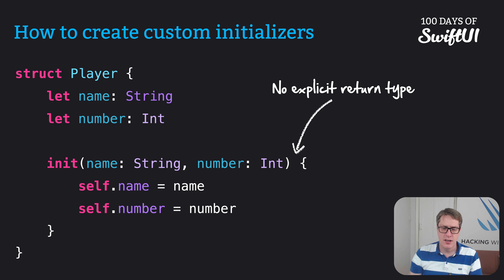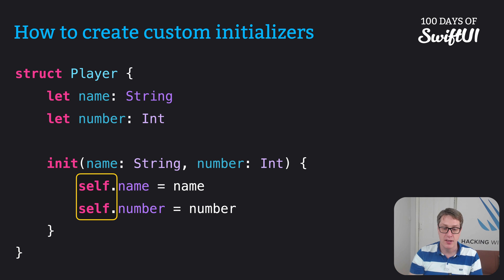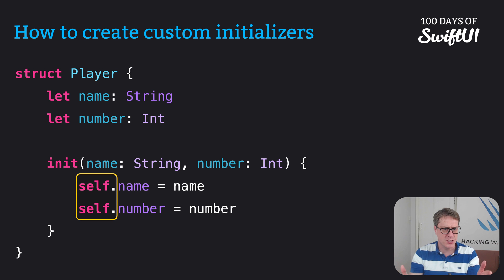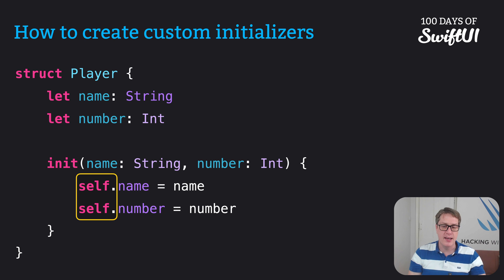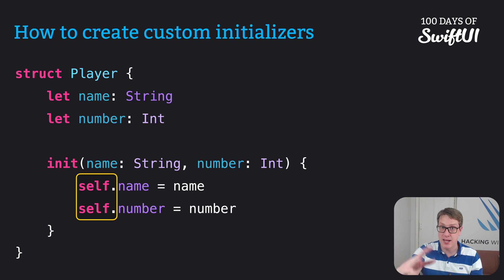Third, I've used self to assign values. To clarify, self.name means: assign the name parameter to self's name property. That last point is particularly important because without self, you'd have name = name — and does that mean you're assigning the property to the parameter, the property to the property, or parameter to parameter? By being explicit with self.name, we mean the name property that belongs to the current player instance — set that to be the parameter name, as opposed to anything else.